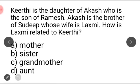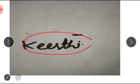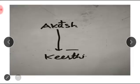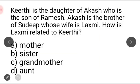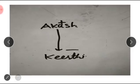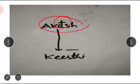Next question: Kirti is the daughter of Aakash, who is the son of Ramesh. Aakash is the brother of Sudeep, whose wife is Lakshmi. So Kirti is Aakash's daughter.